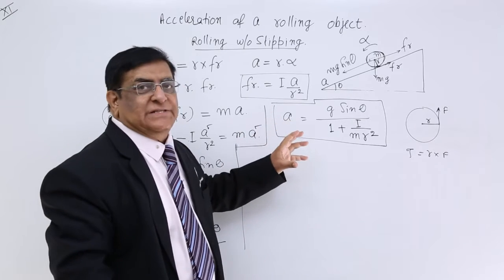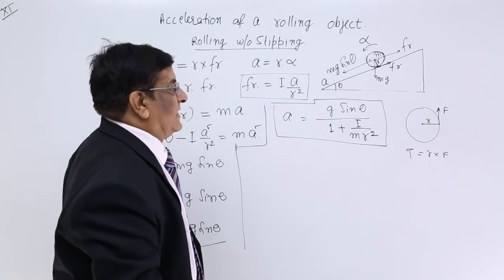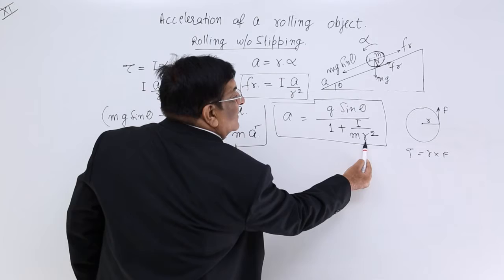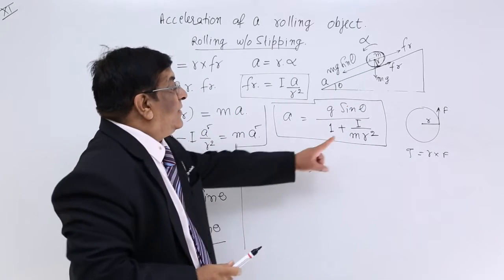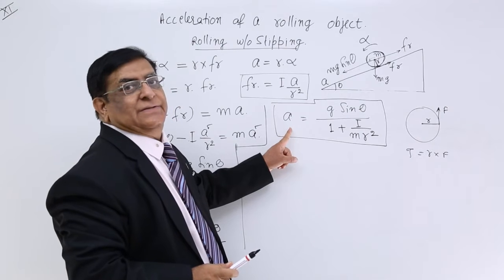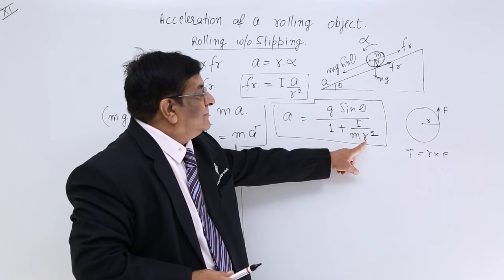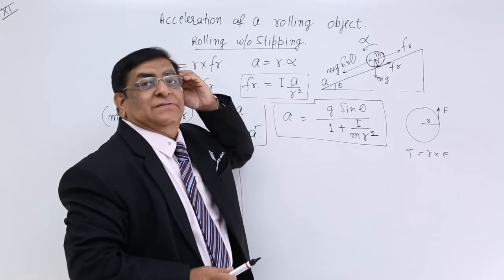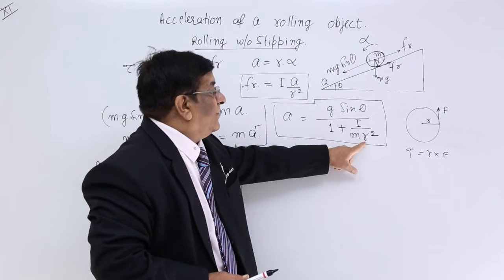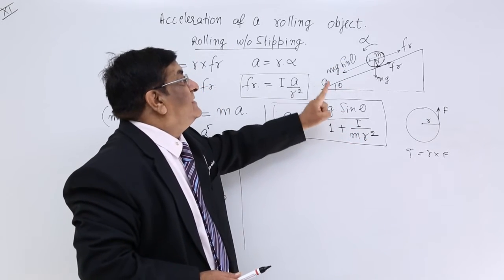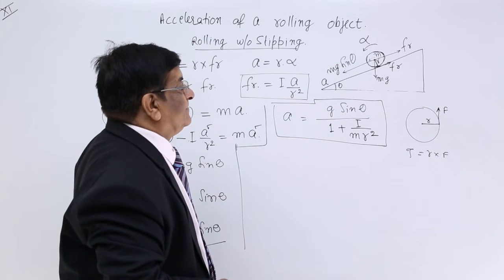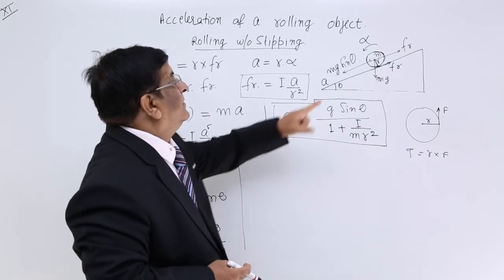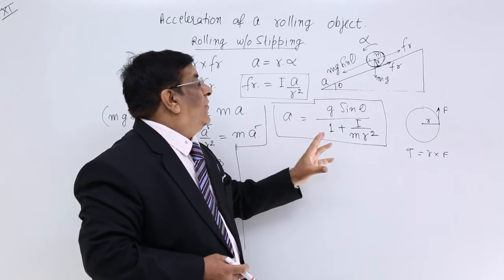This acceleration is different from g sin theta. The denominator depends on radius R, so according to radius, this acceleration will change. Less the radius, larger the denominator, and less the acceleration. So acceleration depends on the radius of rotation. This is a very versatile formula and we can always find the acceleration for different bodies.